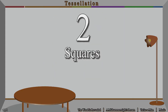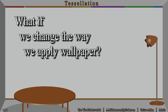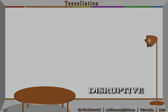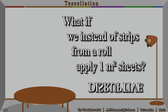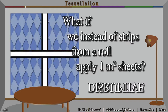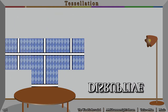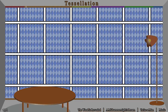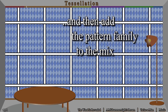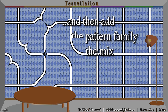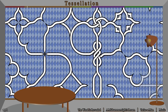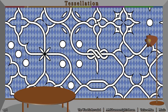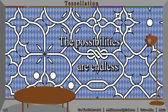Squares. What if we change the way we apply wallpaper? Disruptive. What if, instead of strips from a roll, we apply one square meter sheets? And then add the pattern family to the mix. The possibilities are endless.